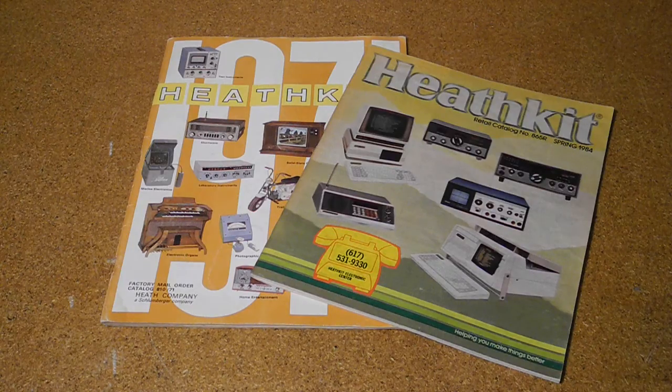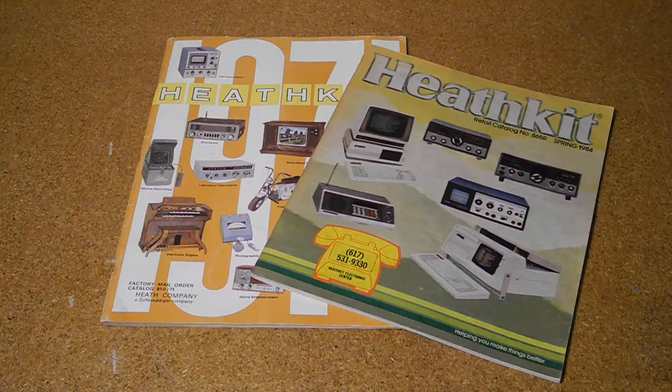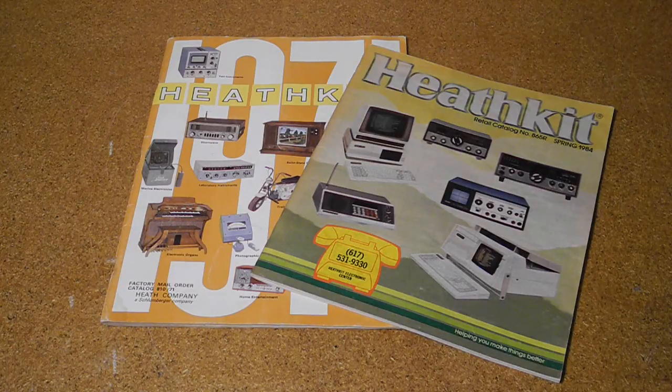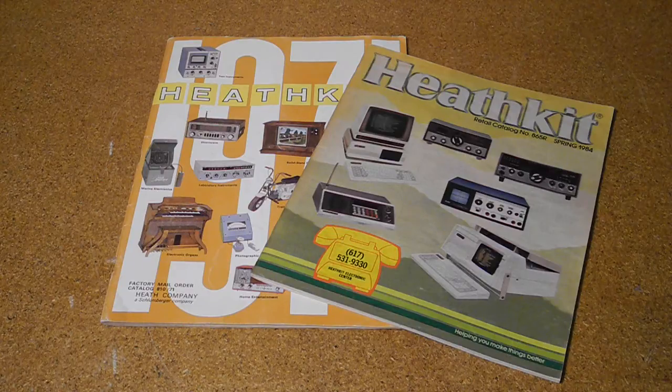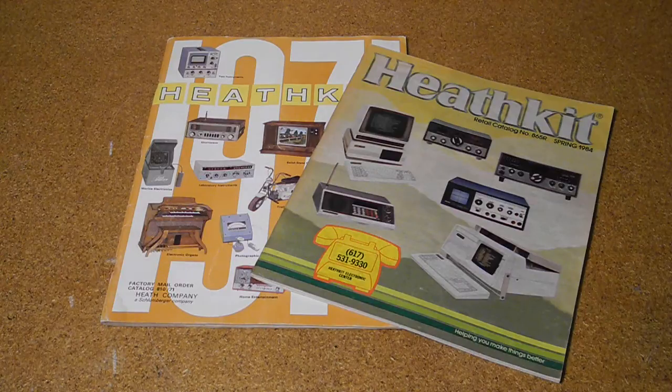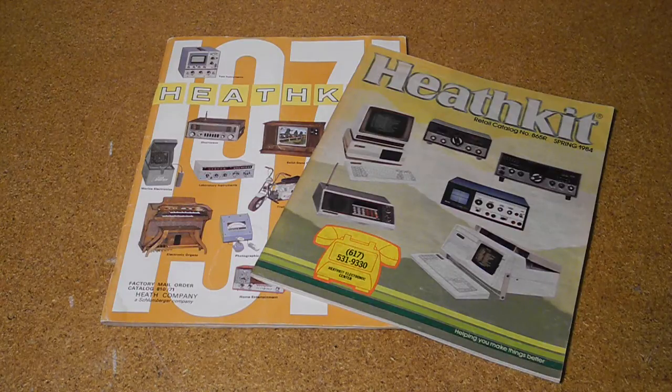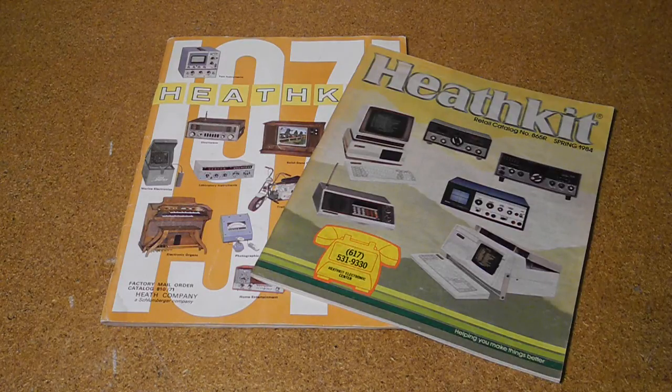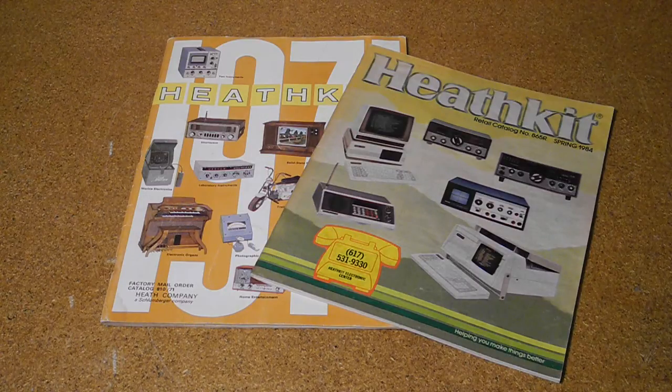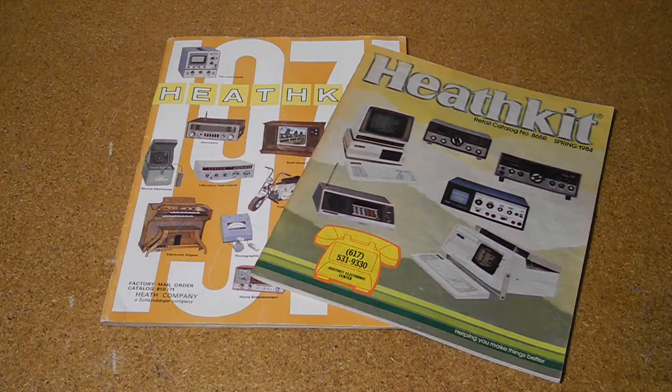Heath Kit was a manufacturer of electronics in kit form. Their product line included amateur radio, test equipment, and various consumer products. By building a piece of electronics, you could save money and gain the satisfaction of having assembled it yourself. Heath Kit sold a number of impedance bridges, starting with the IB-1 in 1950, up to the digital IT-2240, which was sold until 1990.